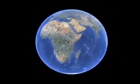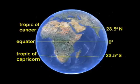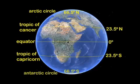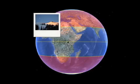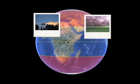The Arctic Circle lies at 66 and a half degrees north, and the Antarctic Circle lies at 66 and a half degrees south. The area of the Earth between these parallels and the tropics is characterized by four distinct seasons.